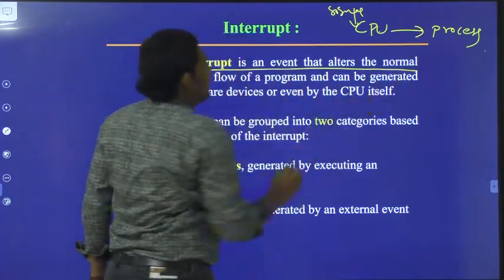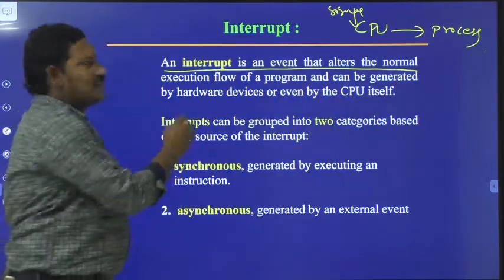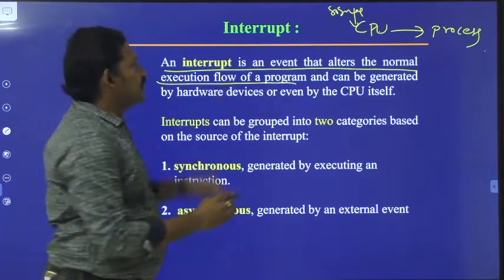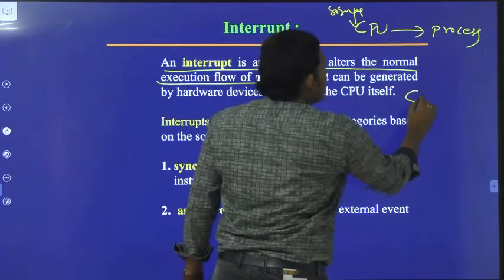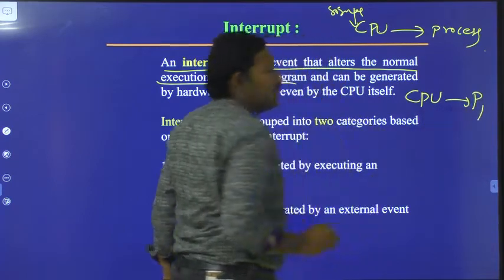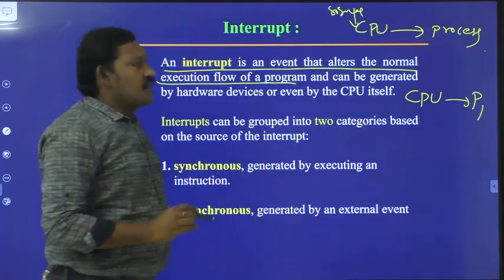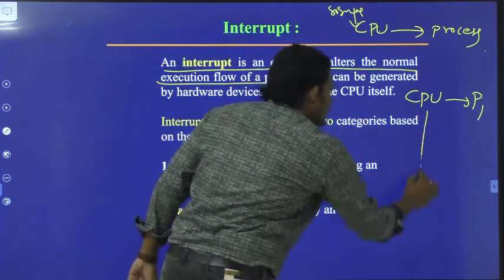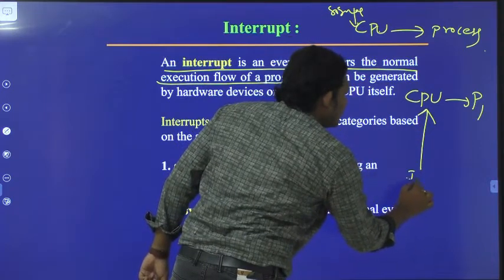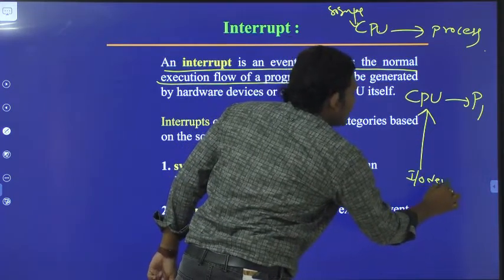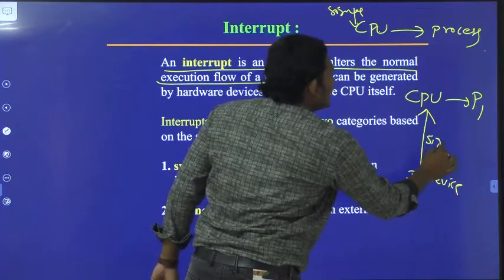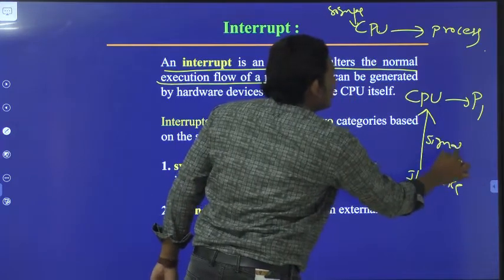An interrupt is an event that disrupts the normal execution flow of a program. The CPU is executing a process — let's say P1 — and it will go for handling I/O. Meanwhile, an interrupt has occurred. An interrupt is a signal sent by the I/O devices.